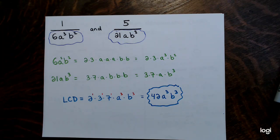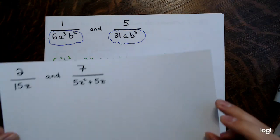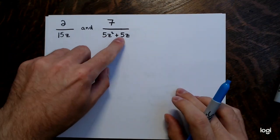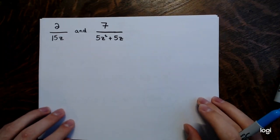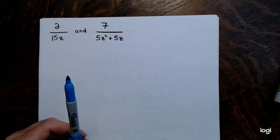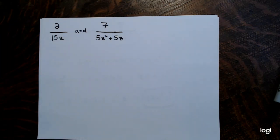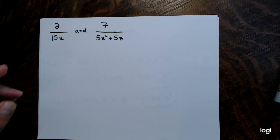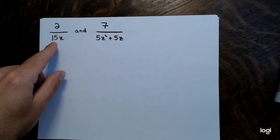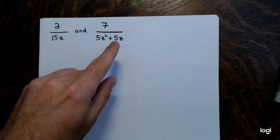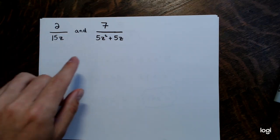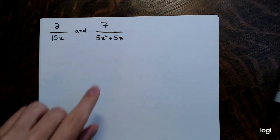Now we bump up the complexity. The next example has two fractions where one denominator has two terms: 2 divided by 15z and 7 divided by 5z squared plus 5z. One denominator is a monomial and the other is a binomial. The procedure does not change.